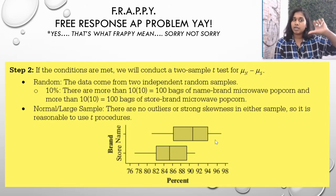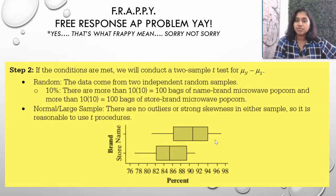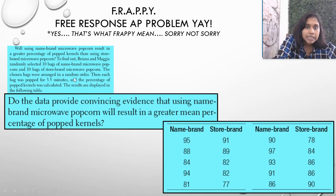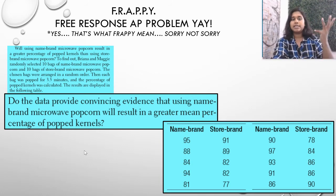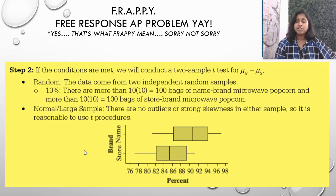So to check if conditions are met, we're going to go through random, 10%, and normal or large counts. Random: they told us the data comes from two independent random samples. I can scroll back and find that. I thought they gave us that information somewhere. Brian and Magalie randomly selected 10 bags. Yes. So they definitely absolutely gave us that information. You can put that in quotes, whatever you've got to do.